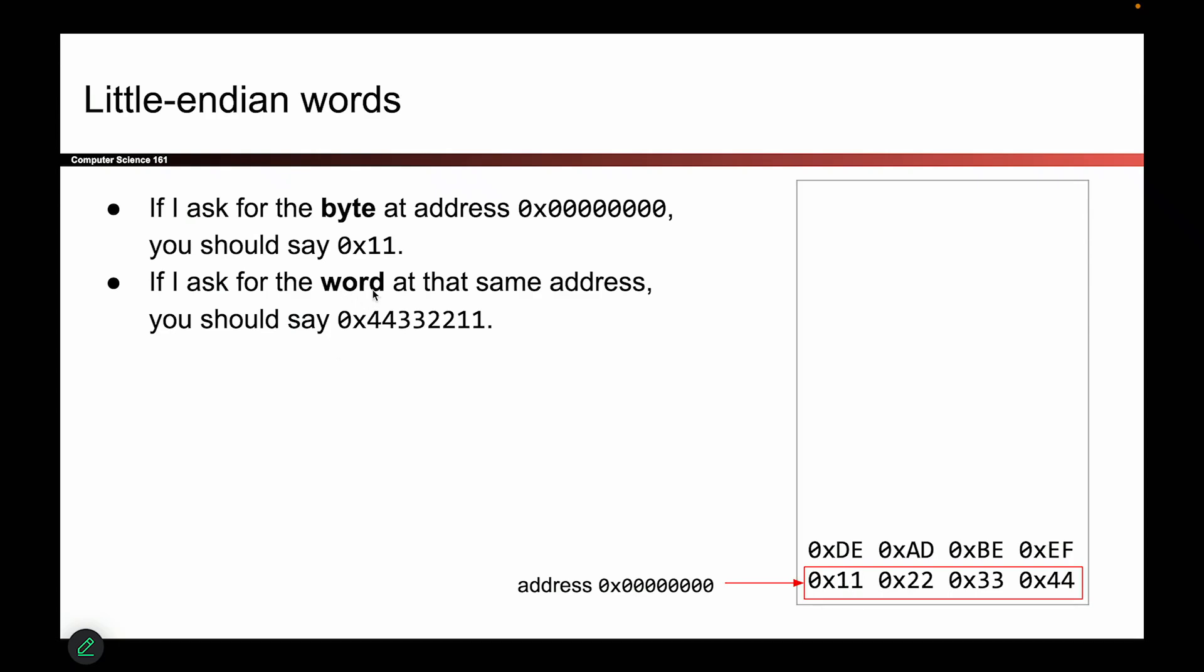But if I want a word, which is a chunk of four bytes that can be combined to form something like an integer, then you'd have to read from right to left and say 44332211, because someone wants a unit of four bytes combined together to form something more intelligent. So both of these are valid interpretations of accessing things from memory. It just depends on what you want to access, the raw number or the date or the integer.